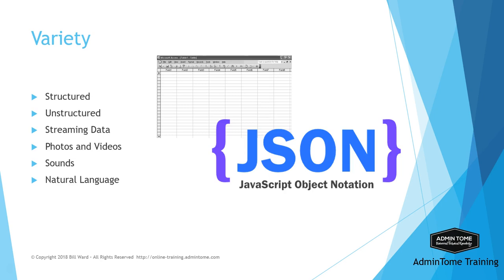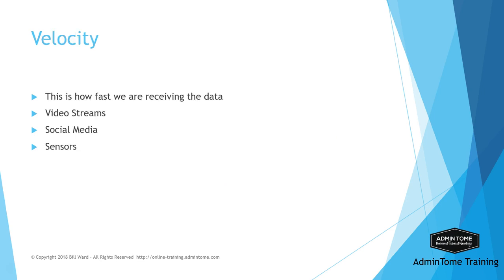The next V is variety. Data comes in many different forms. There is structured data like tables in a SQL database, CSV files, and even JSON or YAML files. There's also unstructured data like photos, videos, and sound recordings. Finally, there is streaming data — structured or unstructured data that comes in real time, such as video camera feeds, temperature sensors, and more. Which leads us to velocity. Big data deals with data that can arrive at high velocity, meaning data is received in real time. Examples of high-velocity data are video streams, social media feeds, and sensor data — types that arrive too fast to be processed using typical means in order to analyze efficiently and make informed business decisions quickly.